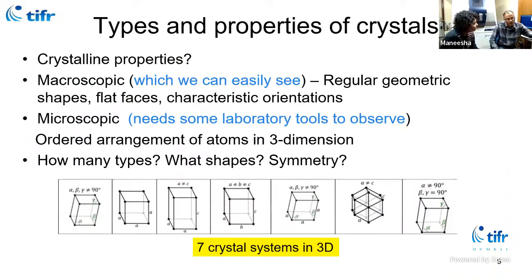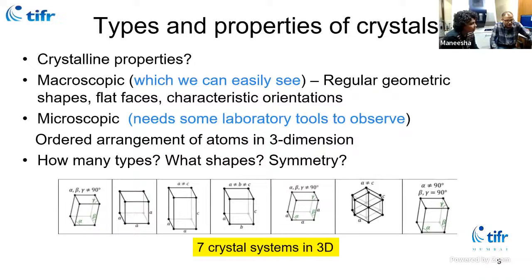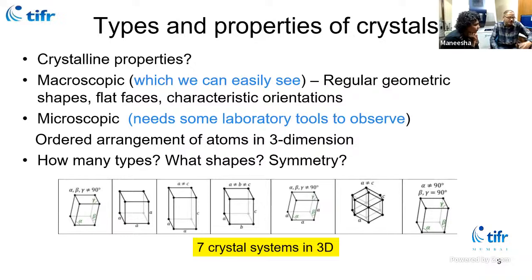Are all crystals the same? No, you can distinguish between several crystals. Any crystal in the universe will belong to one of seven families. You can start with a simple cubic crystal where atoms are at eight corners of a cube. If you stretch or twist this cube, you can generate many different systems called crystal systems. Any crystal in the universe can be one of these seven crystal systems.